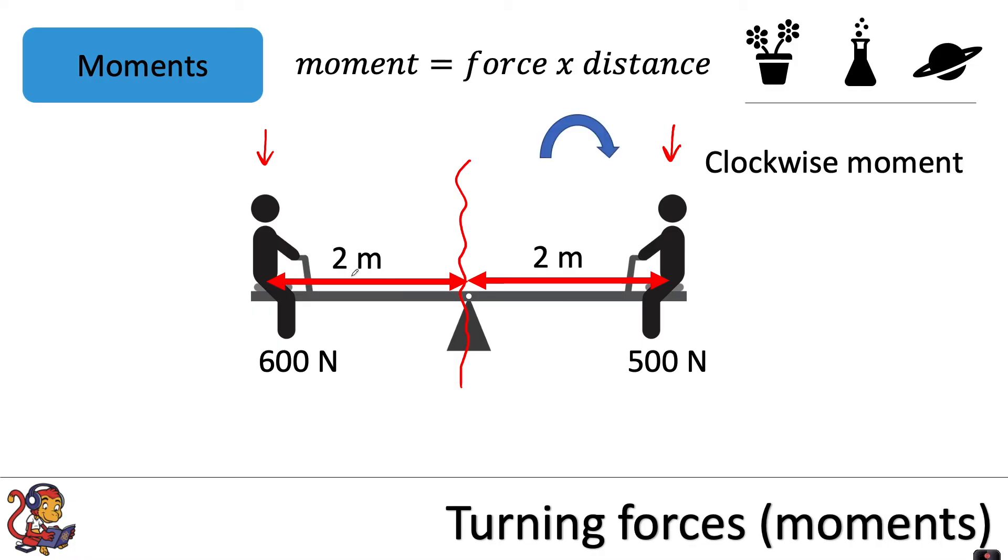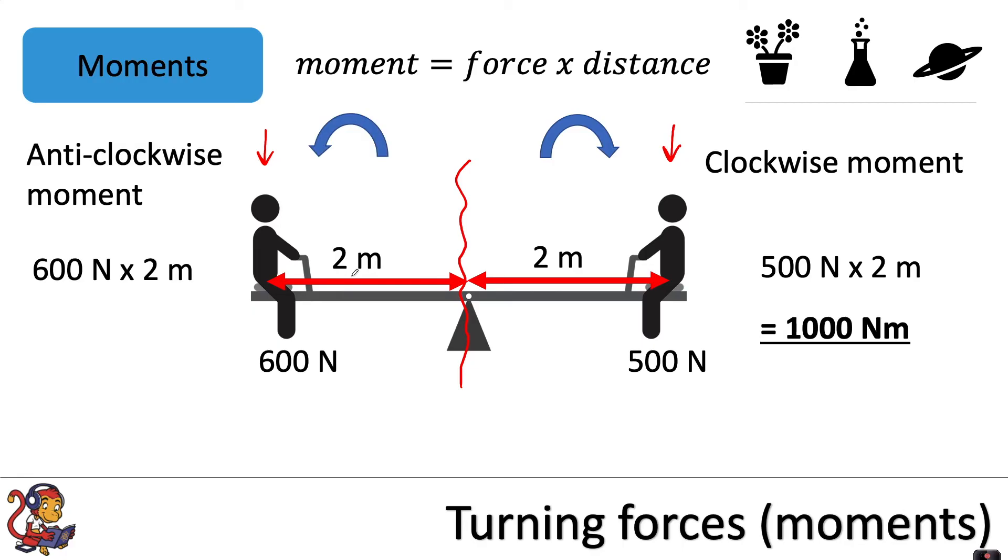First, we'll calculate the clockwise moment. We put our numbers into the equation: 500 newtons multiplied by 2 metres gives us a moment of 1000 newton metres. Now for the anti-clockwise moment: 600 newtons multiplied by 2 metres gives us an anti-clockwise moment of 1200 newton metres.